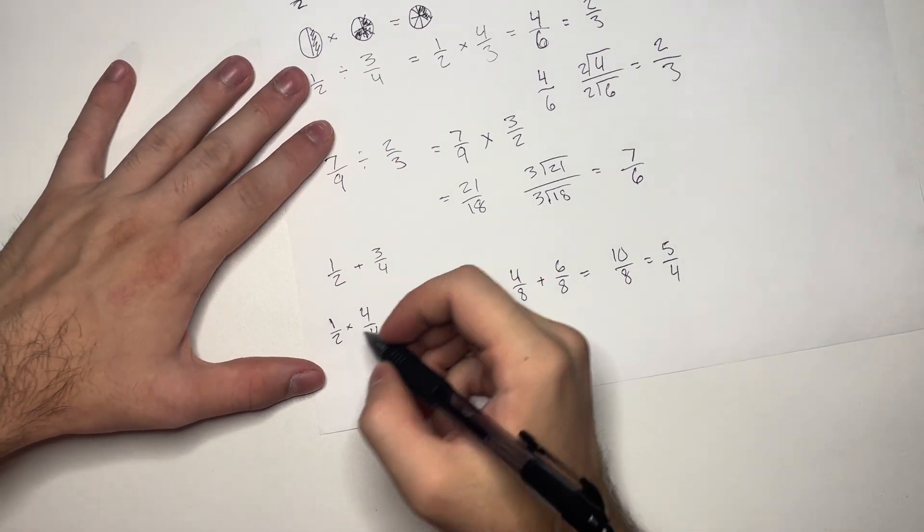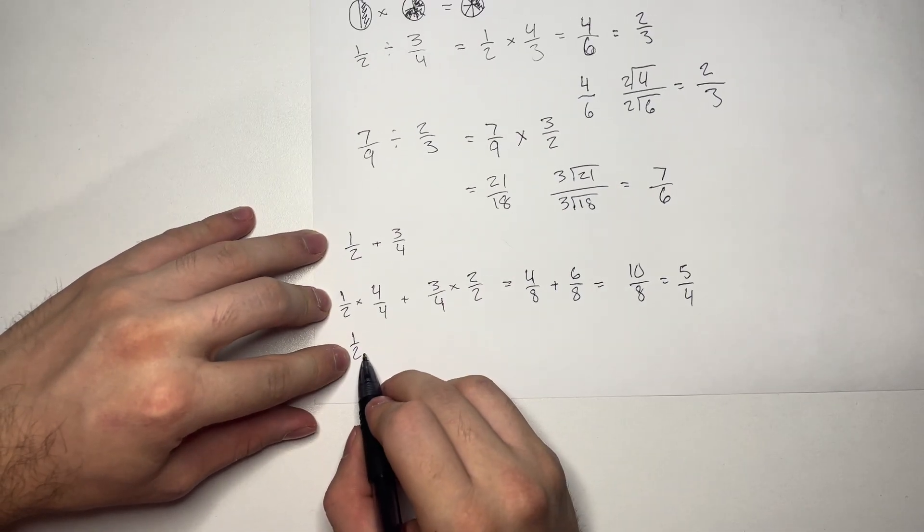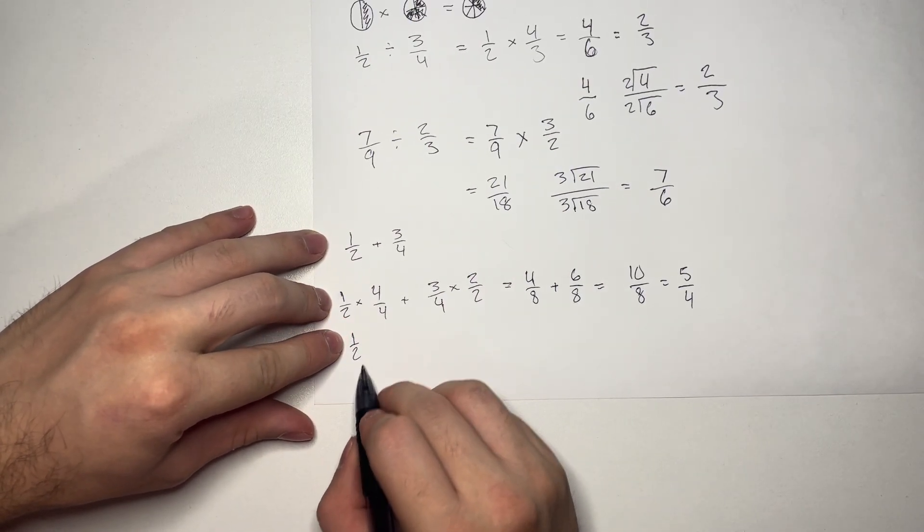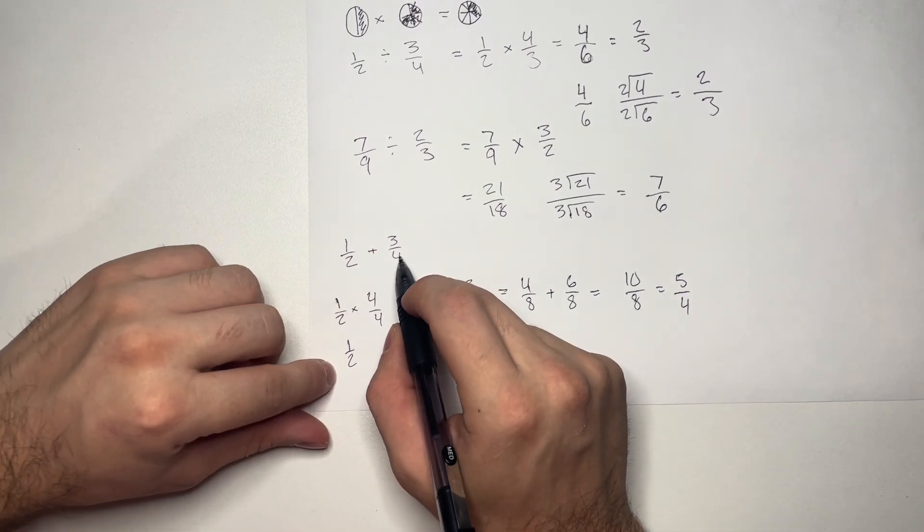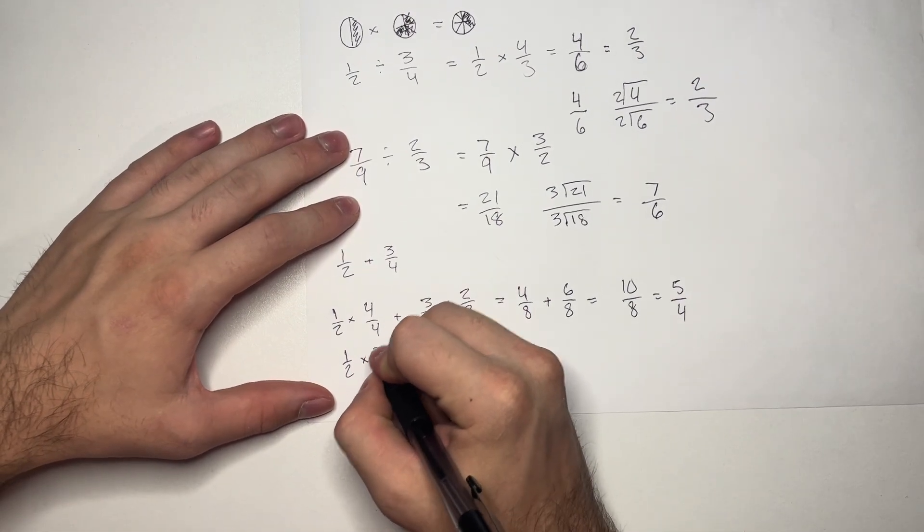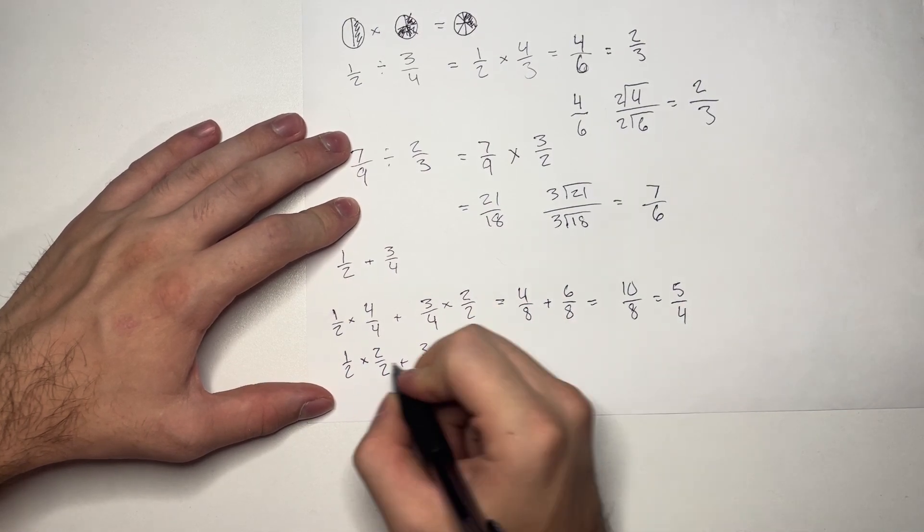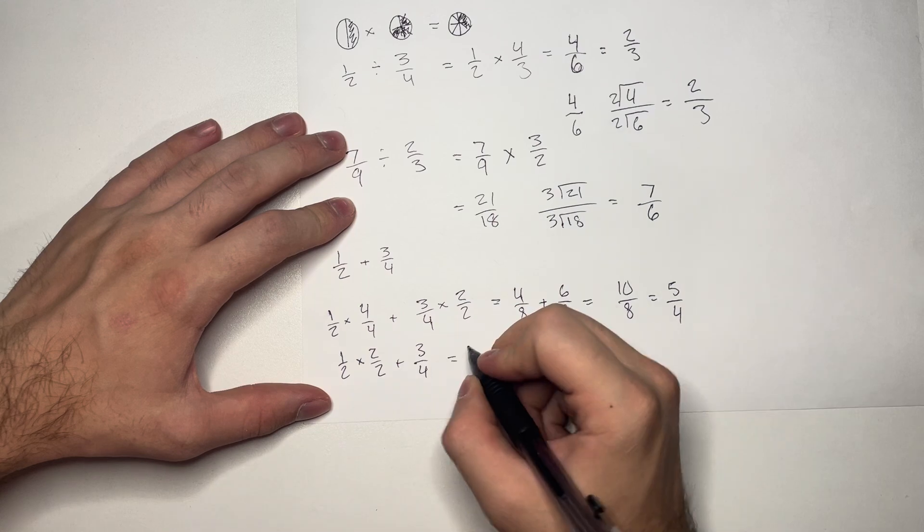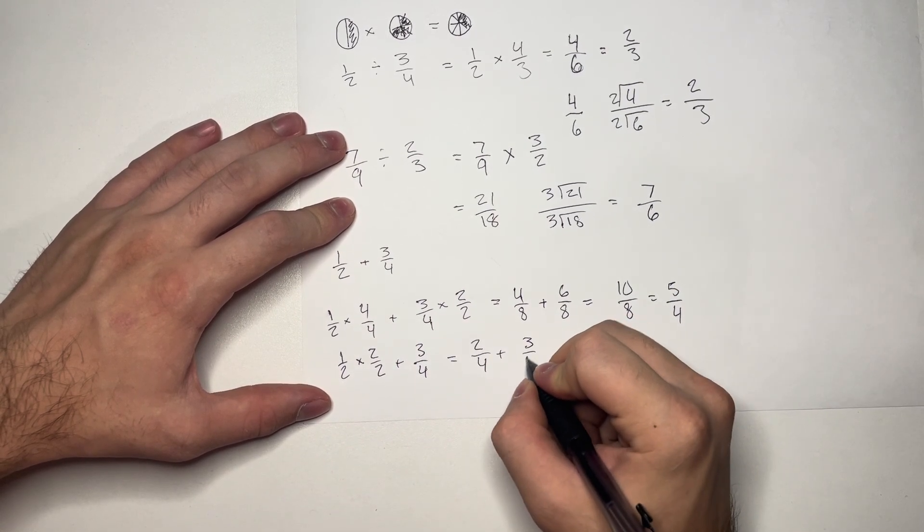Another way to do this is to see that we can just multiply 1 half by 2 over 2. And we would get a denominator of 4. So, let's go ahead and do that now. 1 times 2 is 2. 2 times 2 is 4.